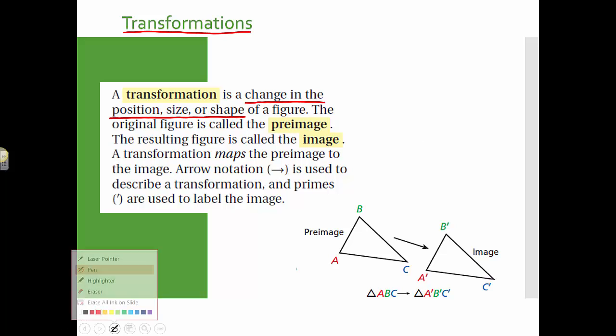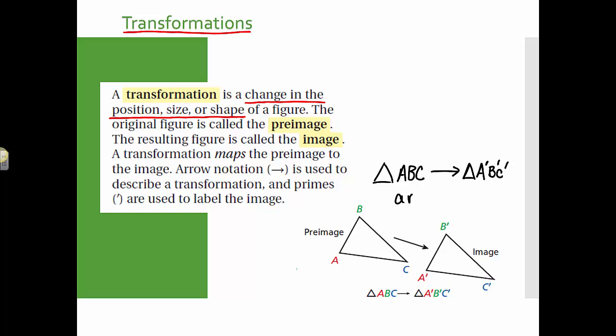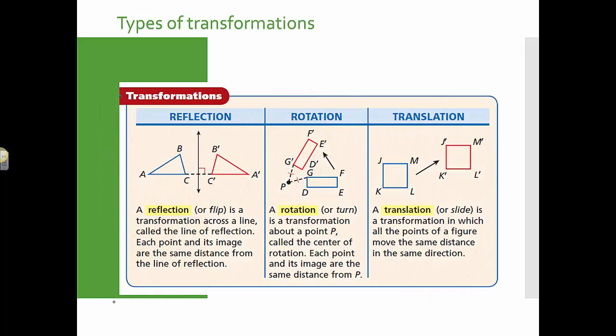When we perform transformations, sometimes we call them a mapping. You're mapping one, the pre-image, to two, the image. And we use arrow notation to show where we went from and where we went to. The pre-image here, triangle ABC, maps to triangle A prime, B prime, and C prime, which means that is the image. So A goes to A prime, B goes to B prime, and C goes to C prime. And that's what we call arrow notation for a transformation.